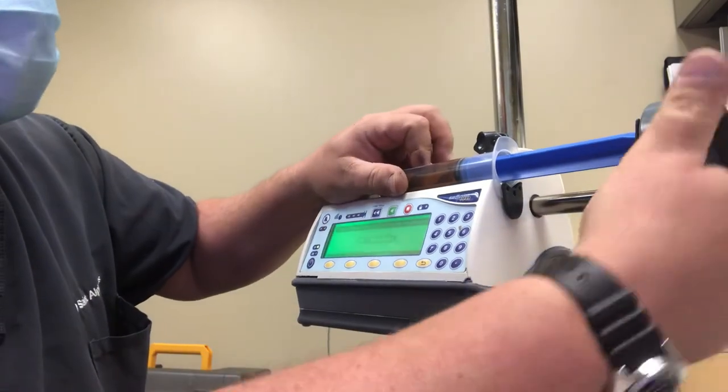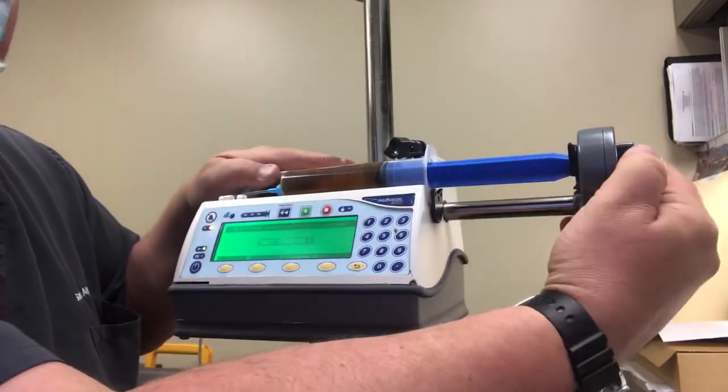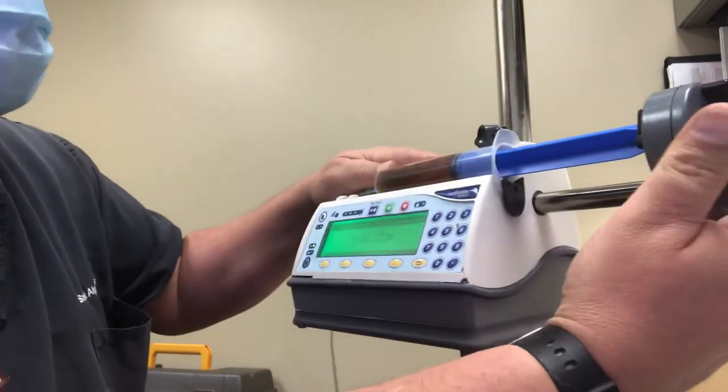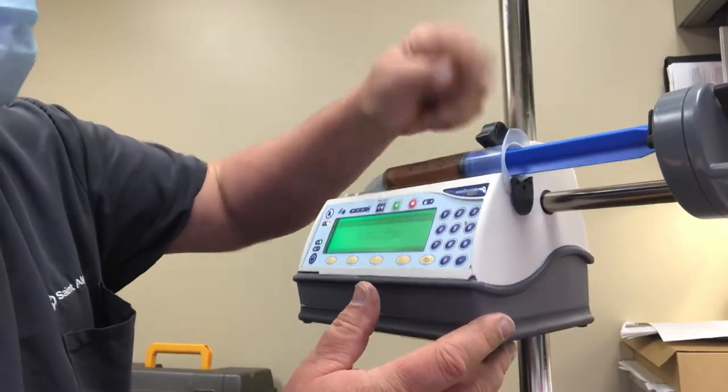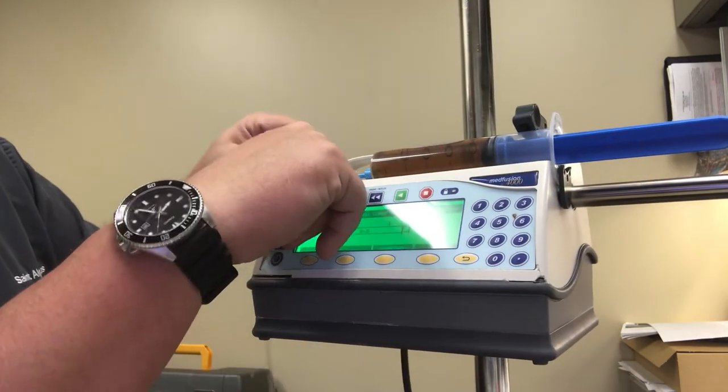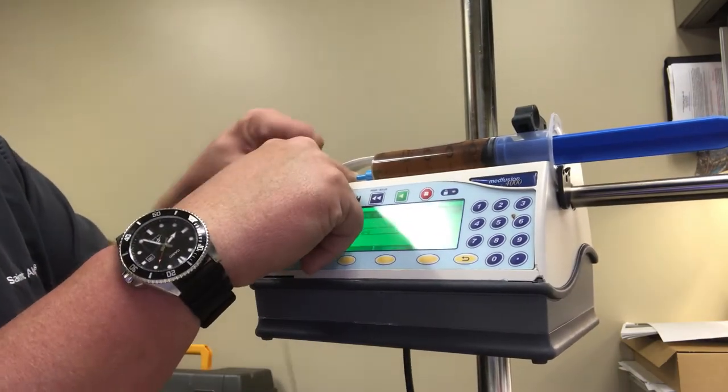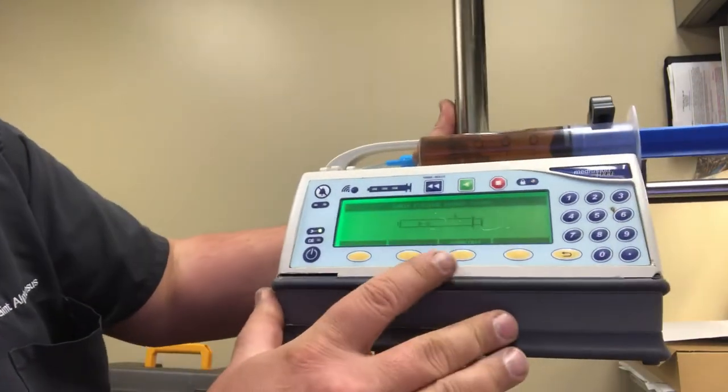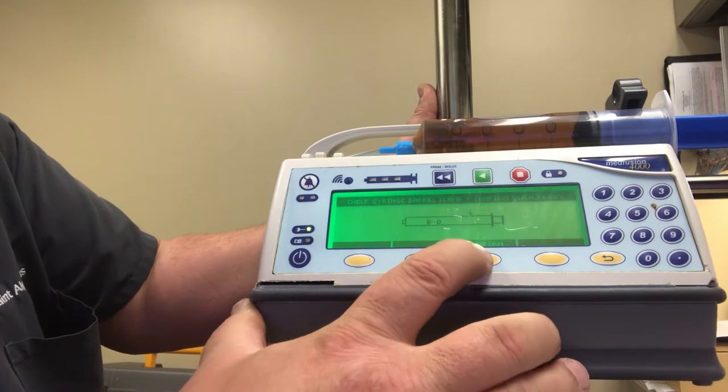So it goes in like that. You saw how I did that and I grabbed those two little things, grab the end of the syringe, that flips there like this. This weaves in and out of these to keep it from disconnecting. And now it wants us to confirm that the barrel is in there correctly.